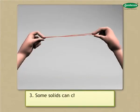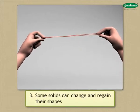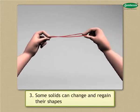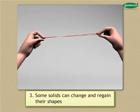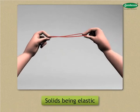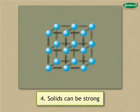Some solids, however, do change their shapes when an external force is applied and regain their shape when the force is removed. A rubber band is a good example of solids being elastic. Solids can be quite strong because the particles are very close, and the forces holding each particle to its neighbouring one are quite strong.